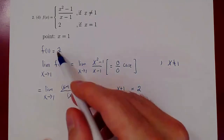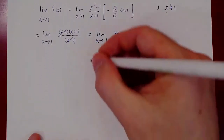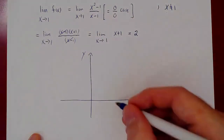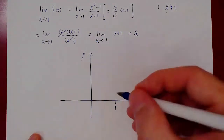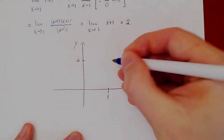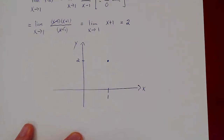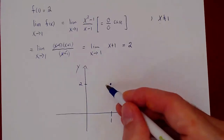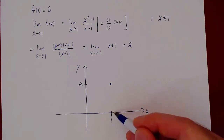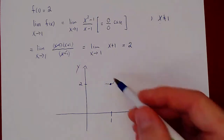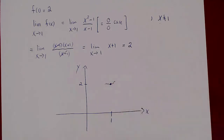You can imagine graphically what this will look like. We consider the function around x = 1. At x = 1, the function is exactly 2, so the y-value is 2 — that is f(1). And we know that when x is very close to 1, the y-value will also approach 2. So around x = 1, when x is very close to 1, the y-value is also very close to 2. The limit as x approaches 1 equals 2, and the function at 1 equals 2, so the function is continuous at x = 1.